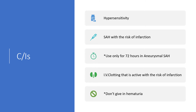Contraindications: do not give tranexamic acid if there is hypersensitivity to tranexamic acid or any component of its formulation. In subarachnoid hemorrhage with risk of infarction, tranexamic acid should not be used — however, it can be used if the subarachnoid hemorrhage is aneurysmal in origin, for up to 72 hours. Active intravascular clotting with risk of infarction also precludes its use. Do not give this medication in hematuria.